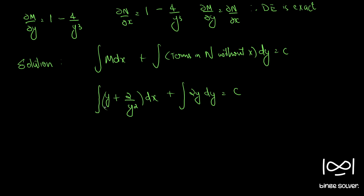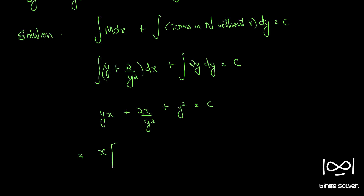Integrating: y plus 2 by y squared is treated as a constant with respect to x. So we get yx plus 2x by y squared, plus 2y squared by 2, which simplifies. Taking x common, the final answer is x times y plus 2 by y squared, plus y squared, equal to c.